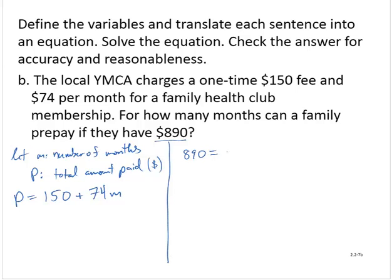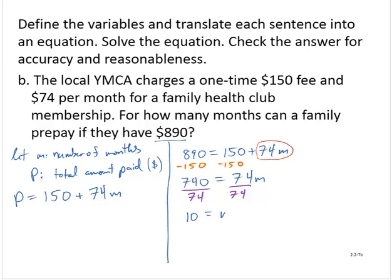890 is equal to 150 plus 74M. Identifying the variable term, I will subtract 150 from both sides of the equation. Yielding 740 is equal to 74M. I will isolate the variable by dividing through by 74. And so M is equal to 10.